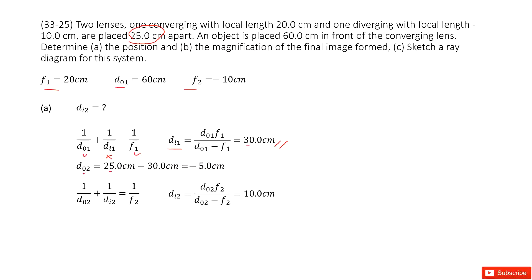Therefore, dO2 becomes 25 minus 30 cm, which is negative 5 cm. Now we write down the thin lens equation for the second lens. dO2 we know, dI2 we don't know yet, f2 we know. So we can solve this equation, get the function for dI2, input all the given quantities, and get the answer there.